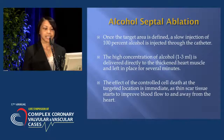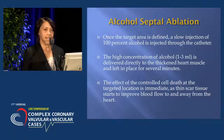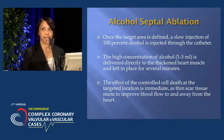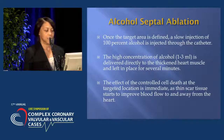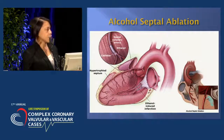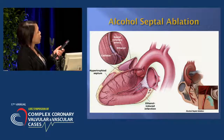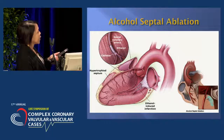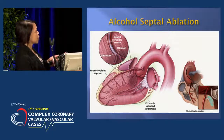Once the target area is defined, a slow injection of 100% alcohol is injected through the catheter. The high concentration of alcohol is delivered directly to the thickened heart muscle and left in place for several minutes, but no more than five minutes. The effect of the controlled cell death at the targeted location is immediate, as thin scar tissue starts to improve blood flow to and away from the heart. This depicts the balloon catheter in position, with alcohol going distally to the area where the alcohol-induced infarction will occur.